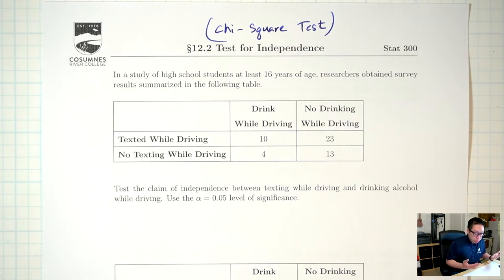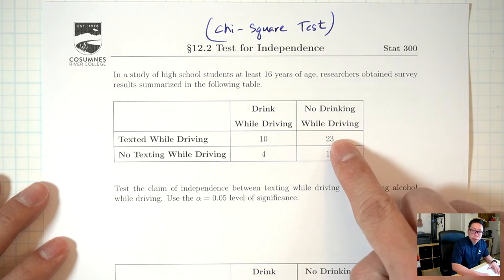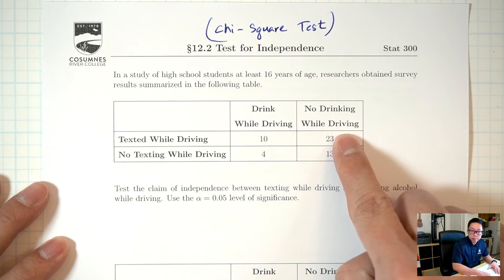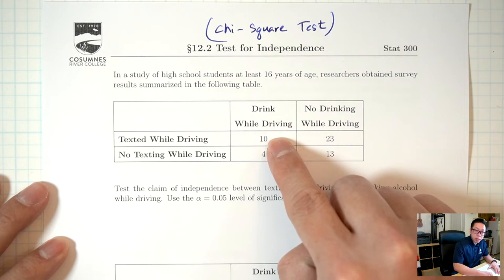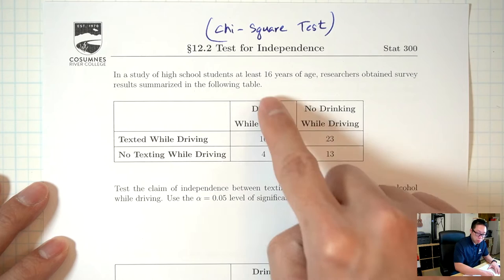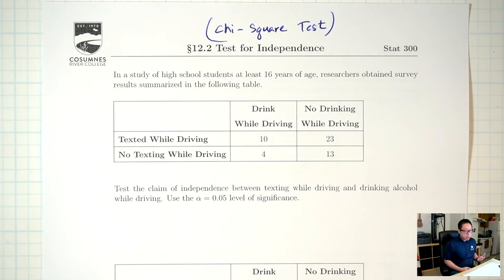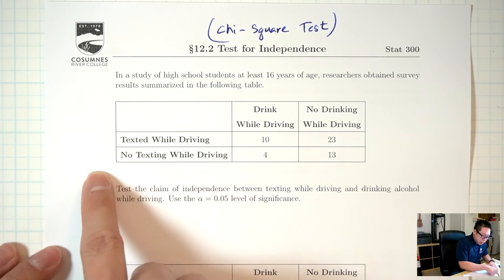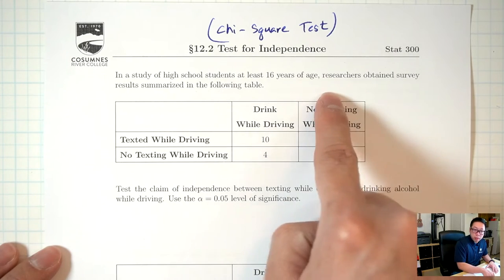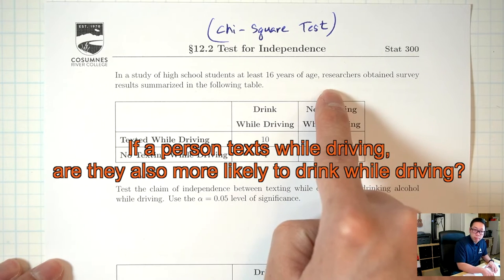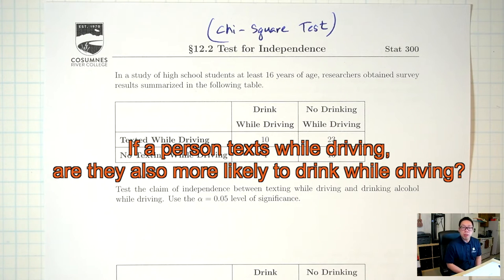What do these numbers mean? This 23, for instance, means there are 23 people who text and drive but don't drink and drive. This 10 means there are 10 people who text and drive and also drink and drive. The question we're asking is: is texting related at all to drinking? In other words, is texting independent or not independent from drinking? And this is why this is called a test for independence.